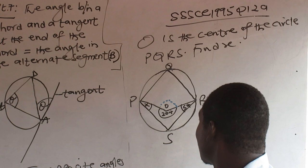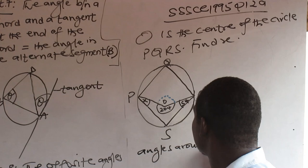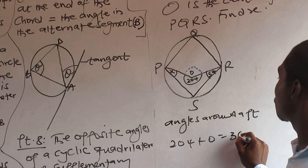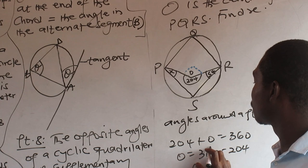So, angles around a point. They sum up to what? 360. 204 plus O equals what? 360. O equals 360 minus what? 204. What is O?